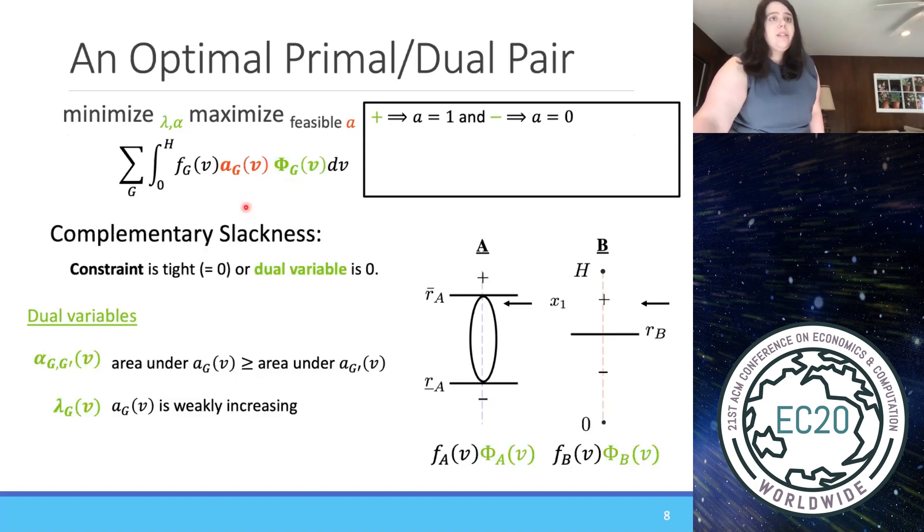Our second constraint is complementary slackness, which says that either the dual variables are 0, or the constraints are tight. So this says if lambda is positive, then the constraint better be tight. What does it mean for this constraint to be tight? It means that the allocation has to be constant. And so here I'm just corresponding to what it means pictorially. If we see a positive sign, it means the allocation has to be 1. If we see a negative sign, the allocation has to be 0. If we see this oval, it means that lambda is positive, and therefore the allocation must be constant.